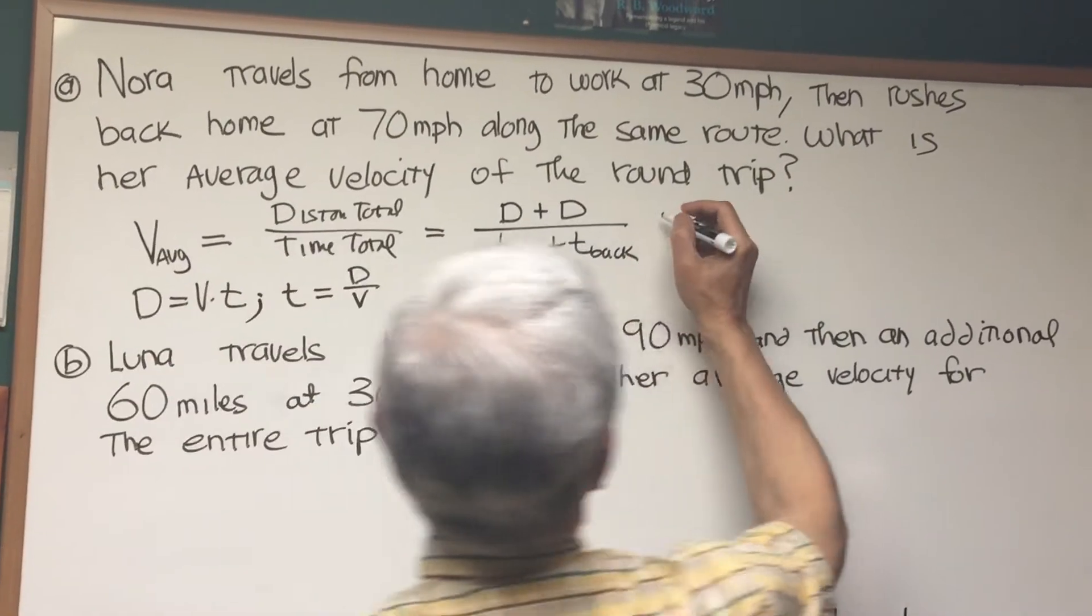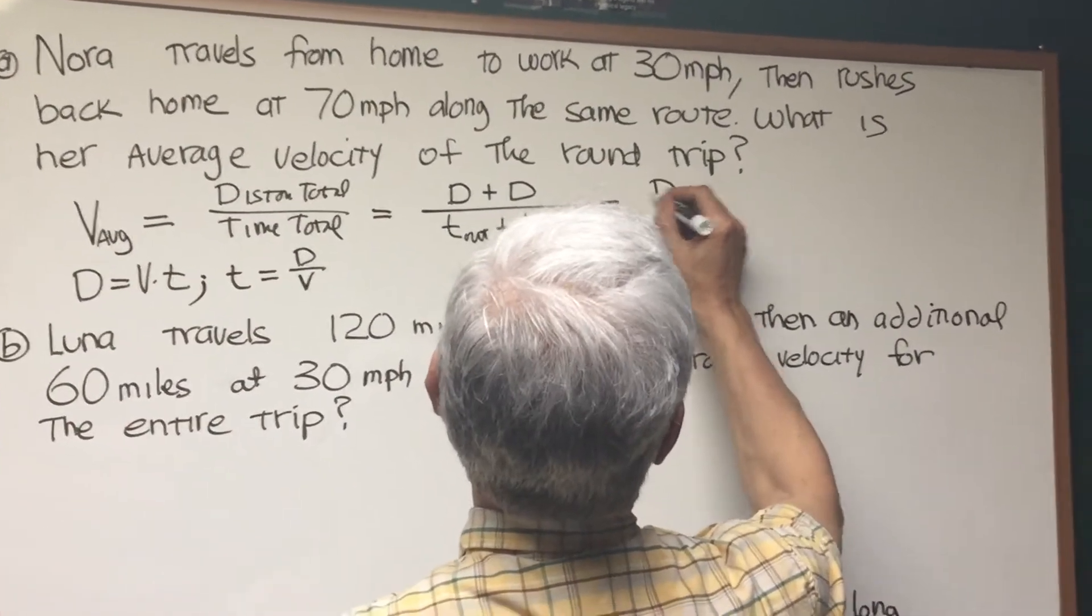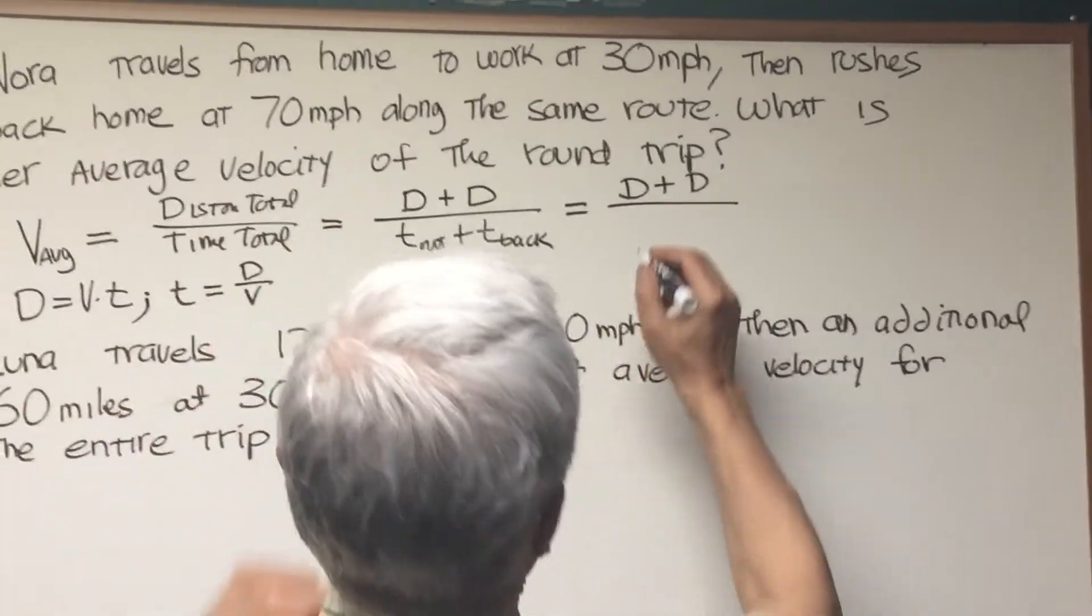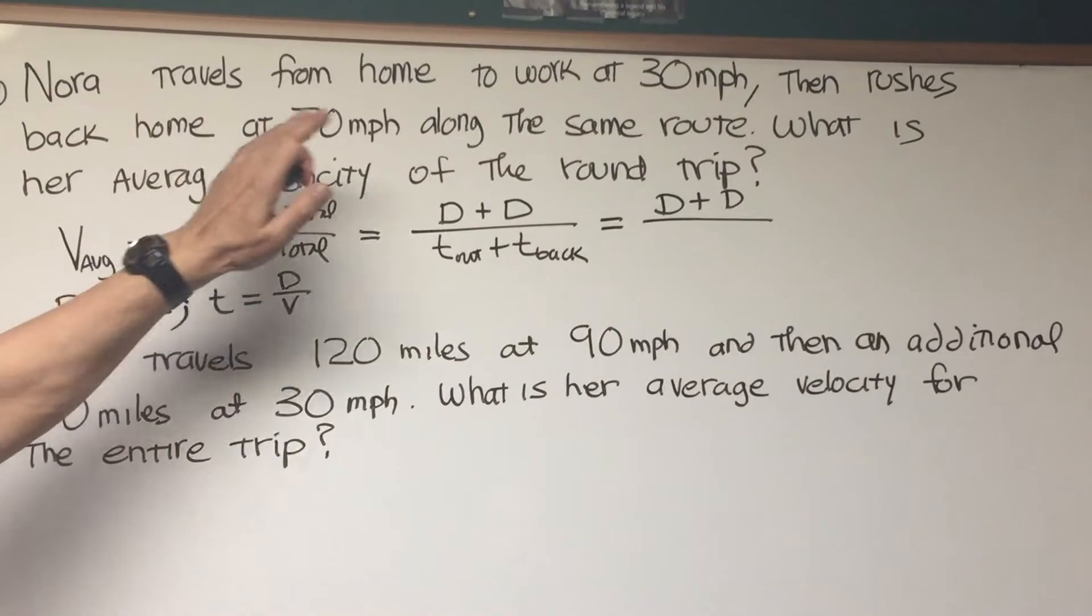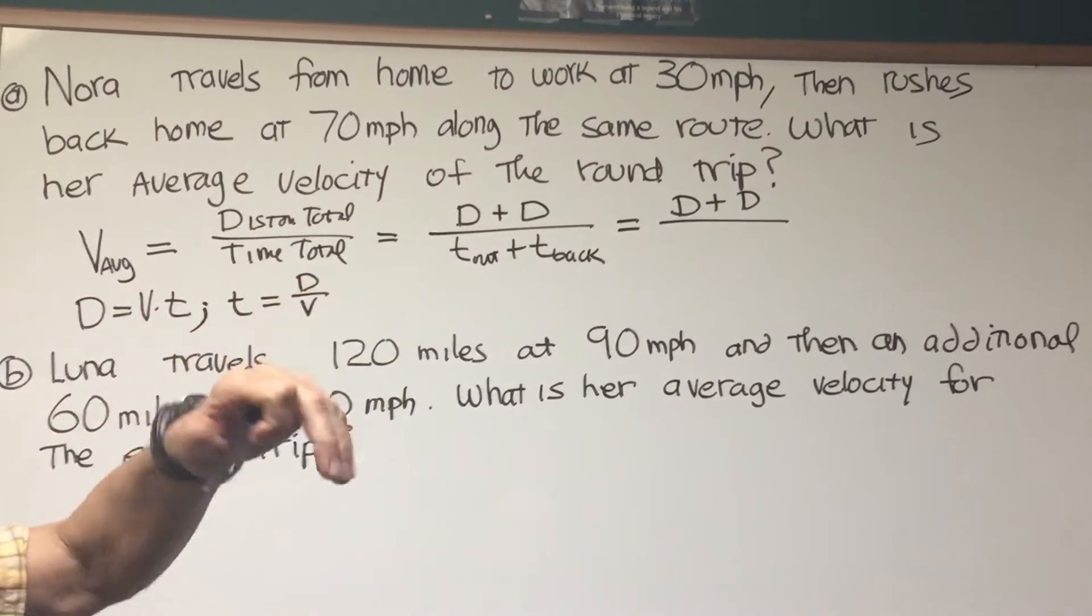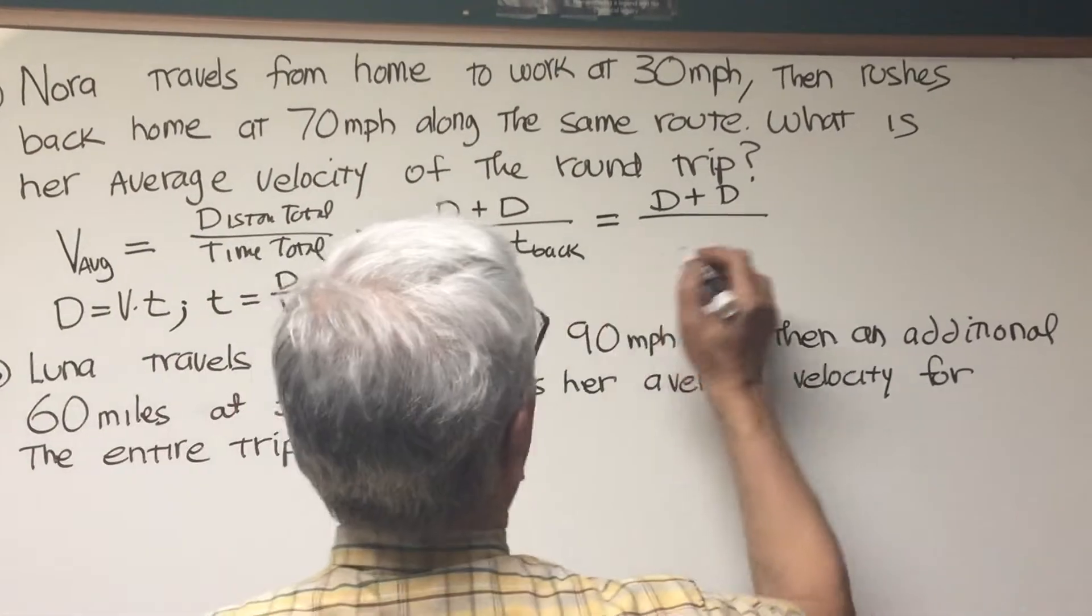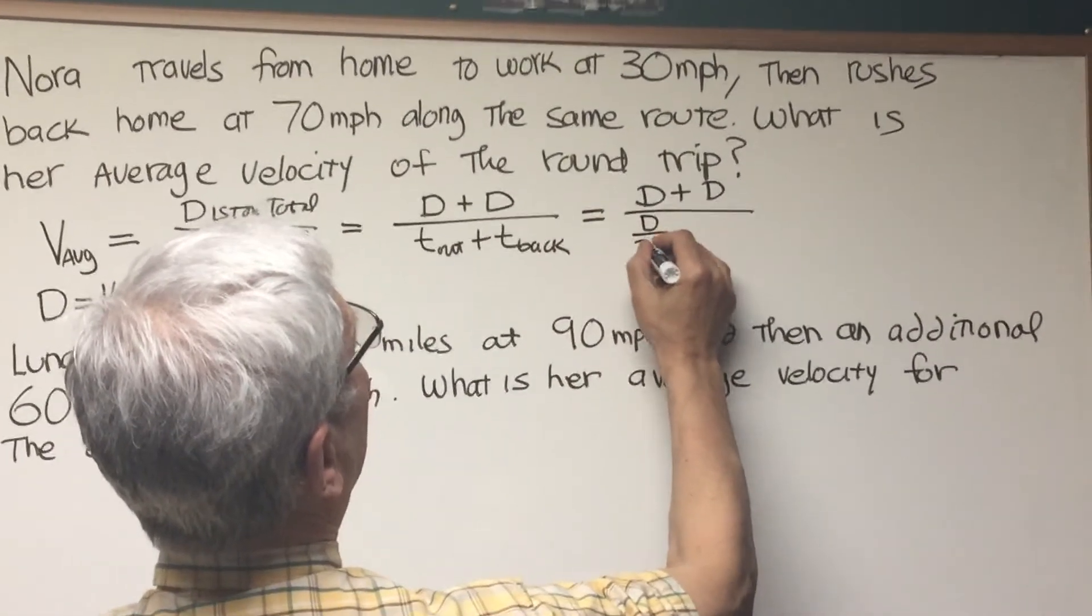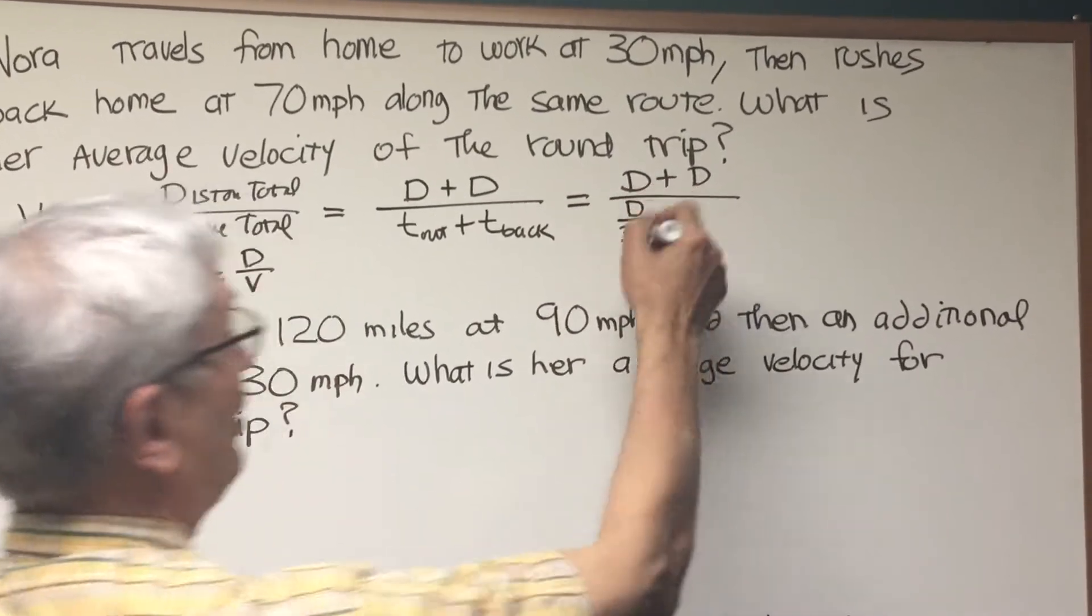All right, so let's continue this problem. We don't know what the distance is at all, and we're going to divide it by, well, the time out travels from home to work at 30 miles an hour. That's the velocity. So express that in terms of time. It's going to be distance over 30 miles an hour, distance over velocity.